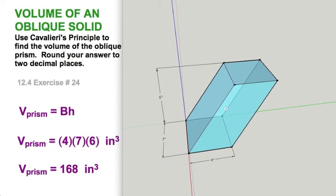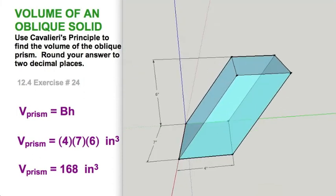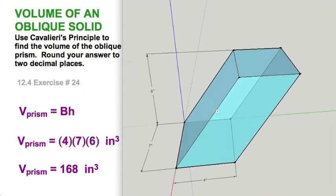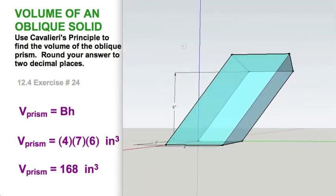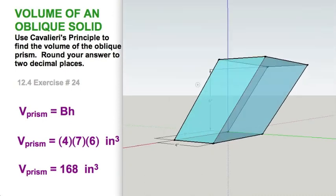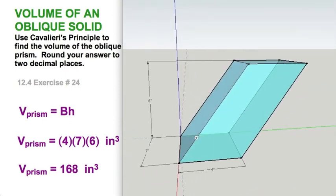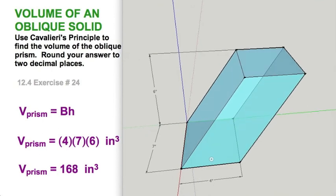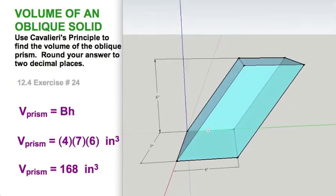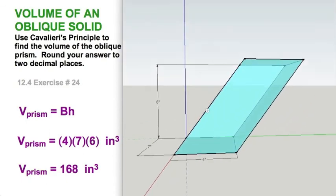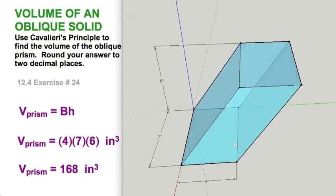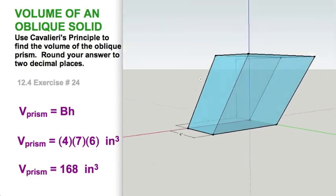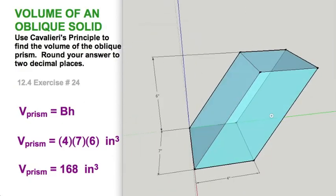In this exercise we visualize Cavalieri's Principle. We have base times height — if this were a rectangular prism, we'd say length times width times height. You can see a 4 by 7 rectangle on the red-green plane extruded 6 inches in the blue direction and then sheared. So 4 by 7 by 6 — that is an example of Cavalieri's Principle.